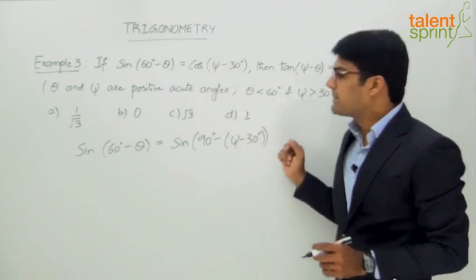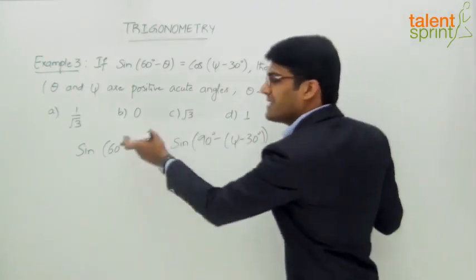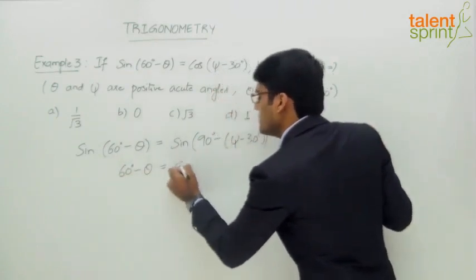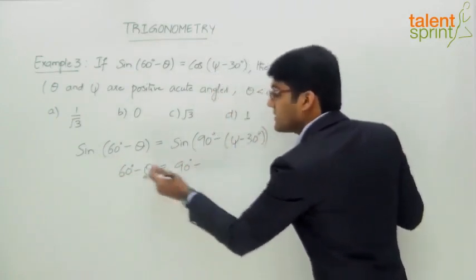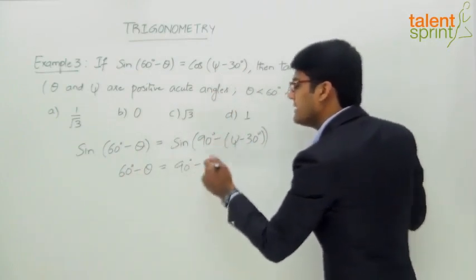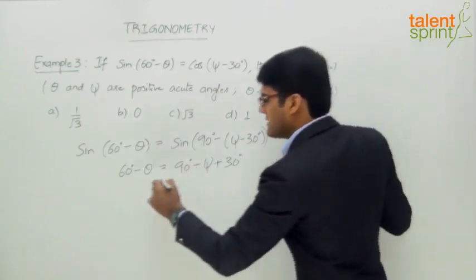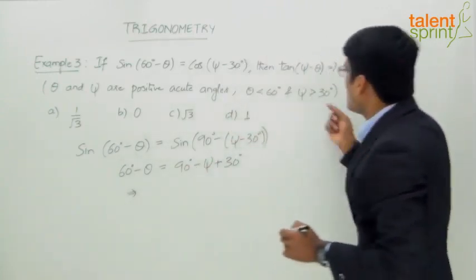Now since the trigonometric ratio on both sides is the same, we can say 60° - θ = 90° - (ψ - 30°). That is, 60° - θ = 90° - ψ + 30°. Let us simplify this. We are looking at...